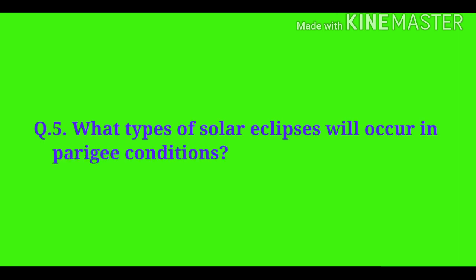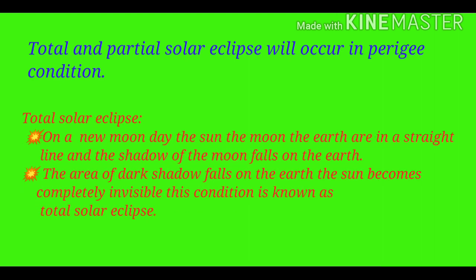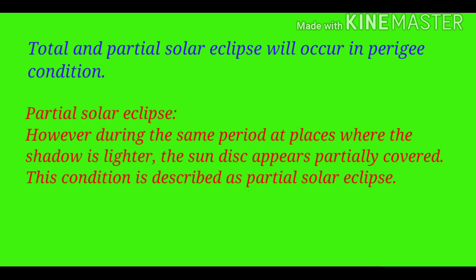Question number five: What types of solar eclipses will occur in perigee condition? Total and partial solar eclipse will occur in perigee condition. Total solar eclipse — on a new moon day, when the sun, the moon and the earth are in a straight line, the shadow of the moon falls on the earth. The area of dark shadow causes the sun to become completely invisible — this is known as total solar eclipse. Partial solar eclipse — during the same period, at places where the shadow is lighter, the sun disk appears partially covered. This condition is described as partial solar eclipse.